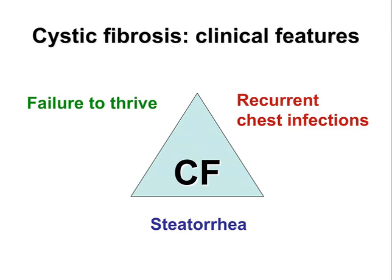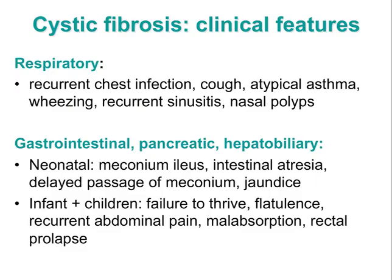The main clinical features of cystic fibrosis to remember are recurrent chest infections, steatorrhea and failure to thrive. 10% of CF patients present with meconium ileus as a newborn. The main clinical features are respiratory: recurrent chest infection, cough, atypical asthma, wheezing, recurrent sinusitis and nasal polyps.